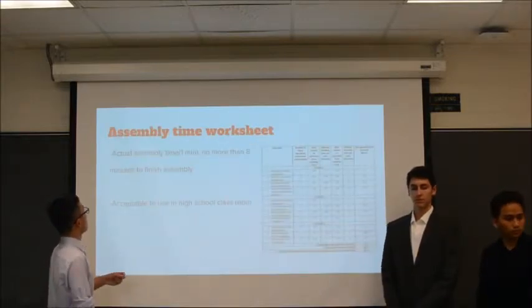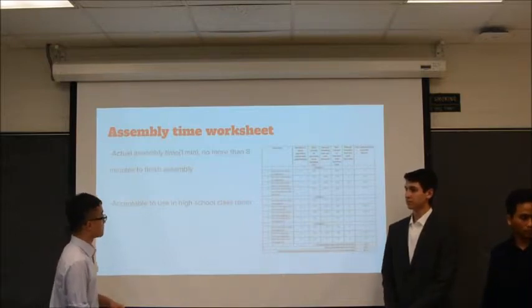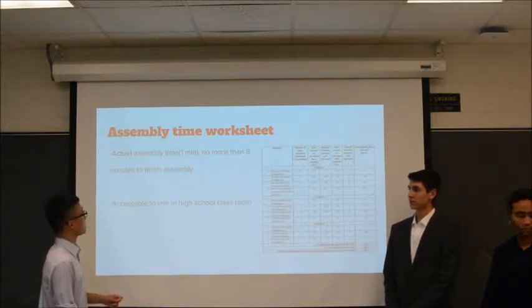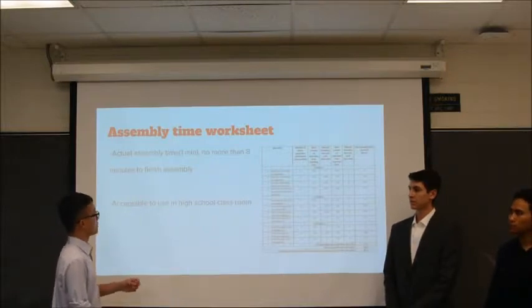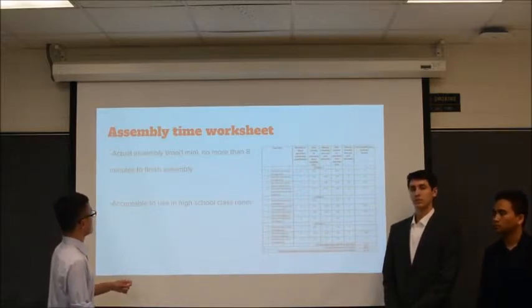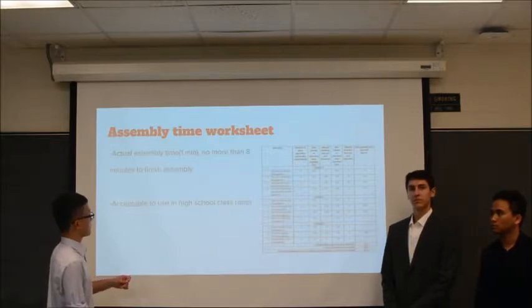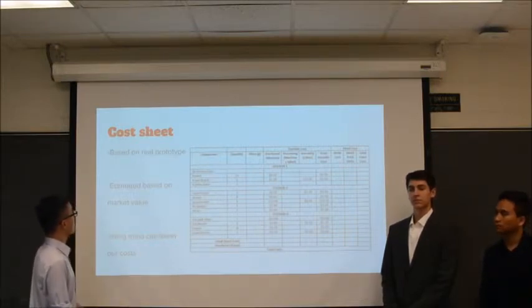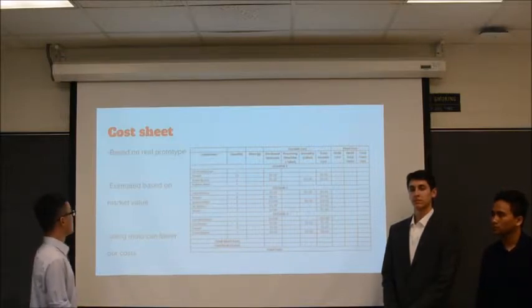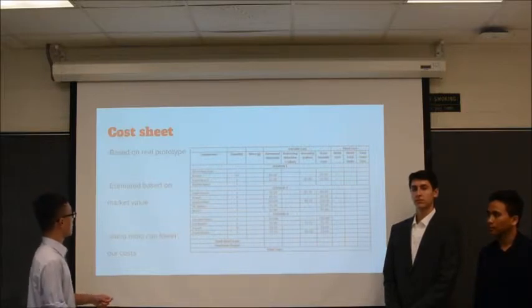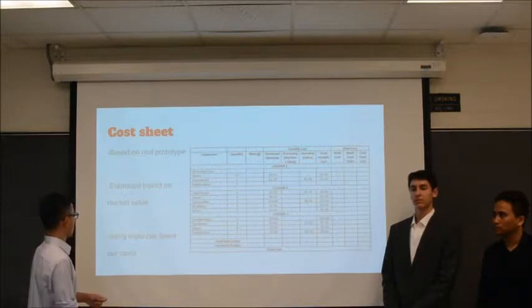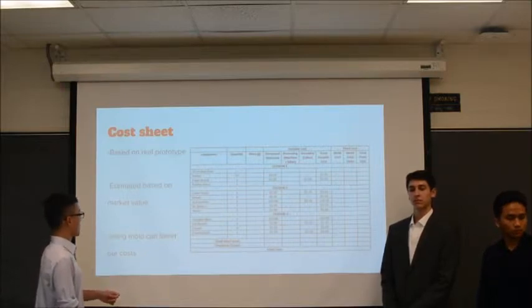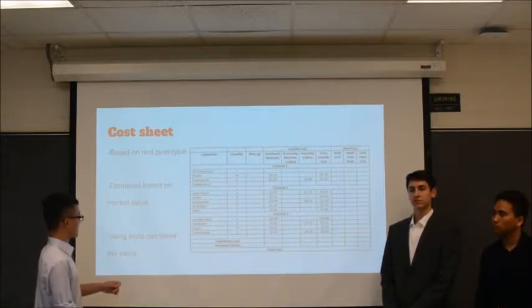For DP3, we added the assembly time worksheet. From the worksheet, we can see the total assembly time is about one minute, and it takes no more than eight minutes to assemble the whole part for all the users. This proves the PRG to be easy and acceptable for use in high school classrooms. We also added cost sheets this time. Our cost sheet is based on our real prototype, and the prices are estimated based on the market value of the individual parts. We also assume that if we use the mold to make the parts, we can manufacture each part with a cheaper cost.